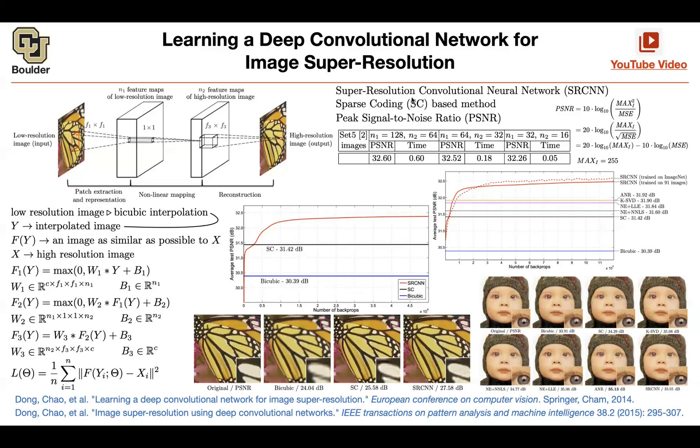The cool thing about super resolution is that you can have as many data points as you like. You can take a high resolution image and then lose information to come up with the low resolution version for free.